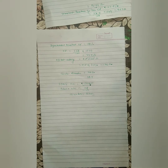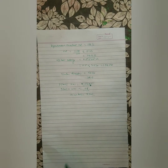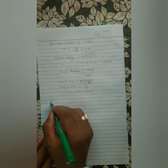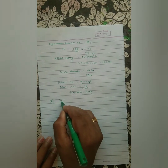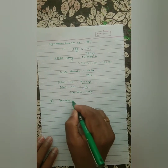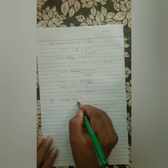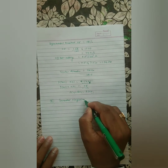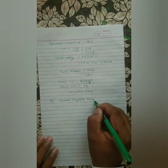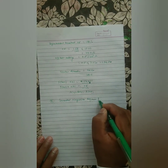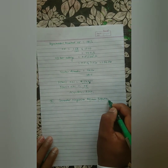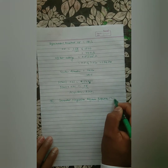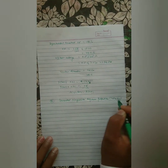Now we have generator negative sequence protection, designated 46G1 and 46G2.